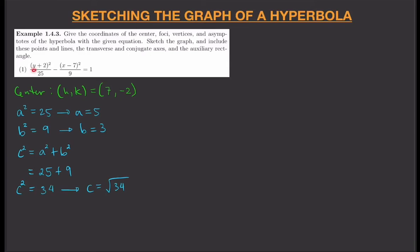To determine orientation, look at the variables x and y. If y comes first in the equation, the hyperbola is vertically oriented. If x comes first, it is horizontally oriented. In this equation, the y variable appears first, so this is a vertically oriented hyperbola.